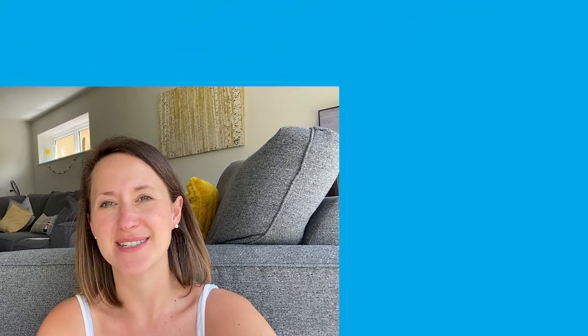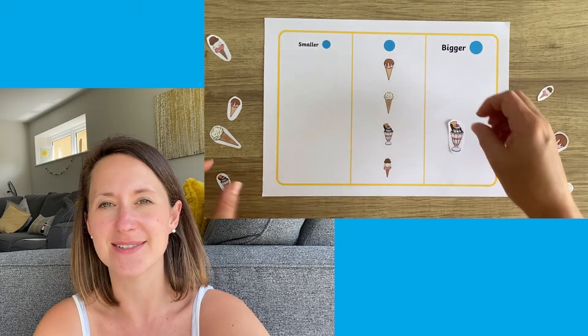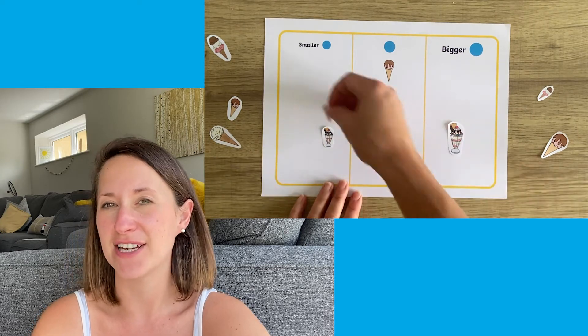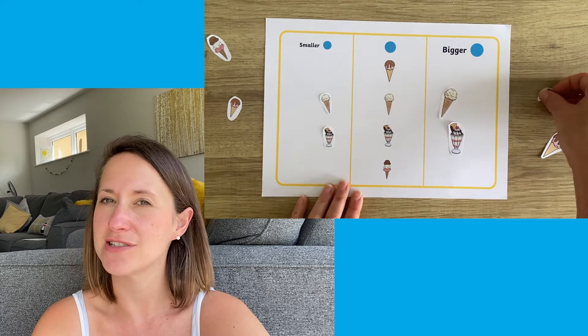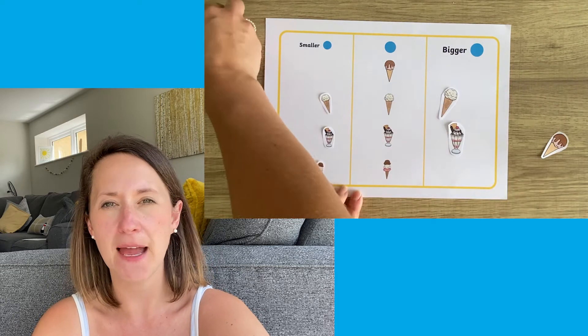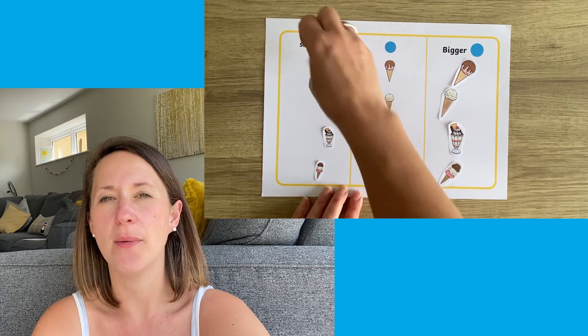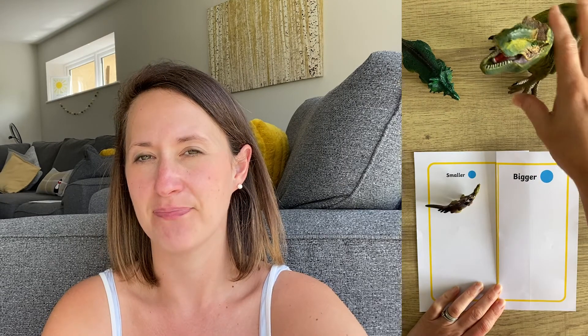We've also got plenty of worksheets to do with bigger and smaller. Get children to sort these ice creams into whether they are the bigger ones or the smaller ones. You could do this without printing anything, getting a range of toys or objects and getting children to sort them into the ones that are bigger and the ones that are smaller. This is a really good opportunity to get children to understand different sizes of things. If they're not sure whether they're big or small, you could introduce a third category: medium.